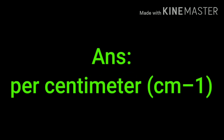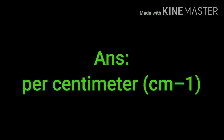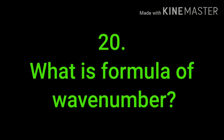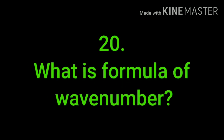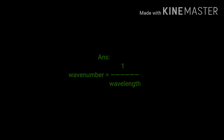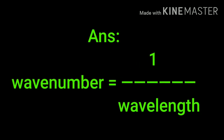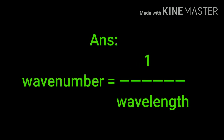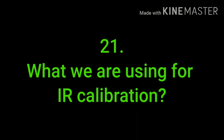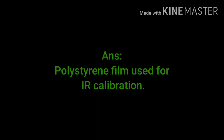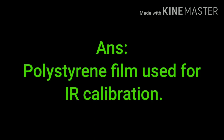What is the measuring unit of the IR spectrum? The measuring unit is wavenumber, in cm⁻¹. What is the formula for wavenumber? The wavenumber formula is 1 divided by the wavelength. What do we use for IR calibration? For IR calibration, a polystyrene film is used.